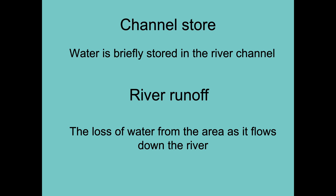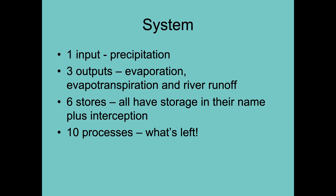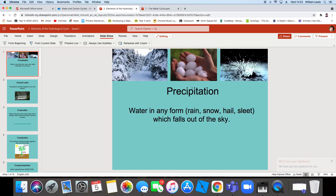What you should now find is that you have one input — precipitation — ten processes, six stores (five of which say 'store' and the other one is interception), and three outputs: evaporation, evapotranspiration, and river runoff or channel discharge. You need to do a bit of colour coding to make sure you know that information. Right — one input, three outputs, six stores, ten processes. That is the end of your first video, ladies and gents. Well done.